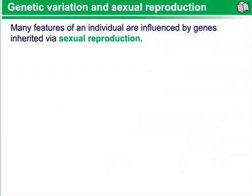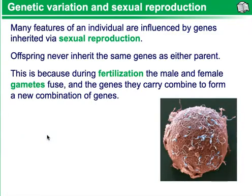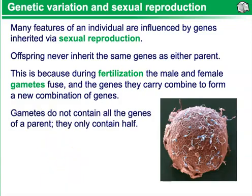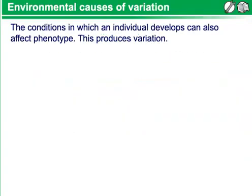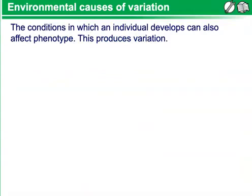Genetic variation and sexual reproduction. Many features of an individual are influenced by genes inherited through sexual reproduction. Offspring never inherit the same genes as either parent, because during fertilization the male and female gametes fuse and the genes they carry combine to form a new combination of genes. Gametes do not contain all the genes of a parent — they only contain half. This means each gamete can contain a different combination of the parent's genes, which can then be passed on to the offspring. The conditions in which an individual develops can also affect phenotype, producing variation.